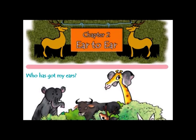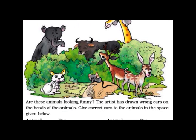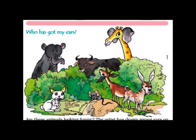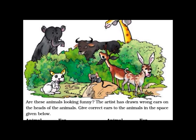Who has got my ears? Children, carefully observe the picture. Here you can see an elephant, a giraffe, deer, a rat, and a rabbit. Now carefully observe — you will find some difference here. Are these animals looking funny? The artist has drawn wrong ears on the heads of the animals. The ears are wrong.